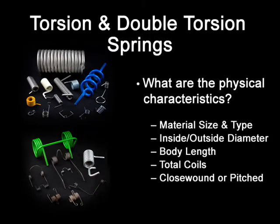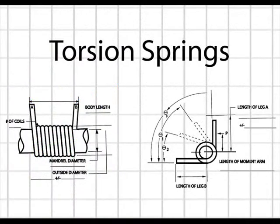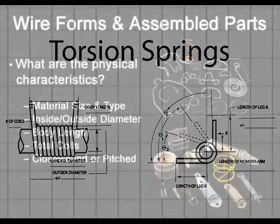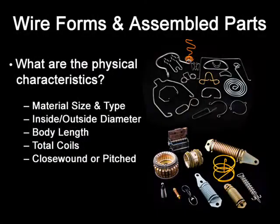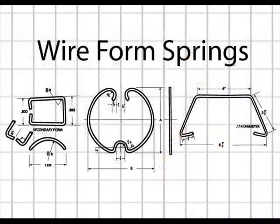Torsion springs and double torsion springs are used to apply torque. Depending upon assembly, energy can be supplied in a pulling or pushing force. Wire forms are designed with a wide variety of shapes to perform many functions. There are no general design equations for wire forms.